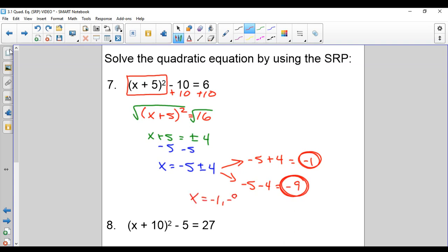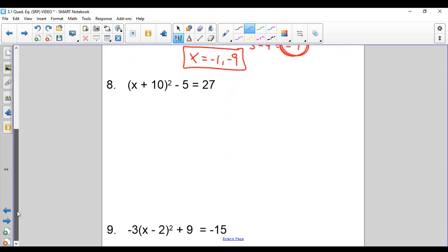We're going to rewrite it as X equals negative 1 and negative 9. You can do that too. You can leave them circled up like I have right about there. Same deal. Add 5 to both sides.